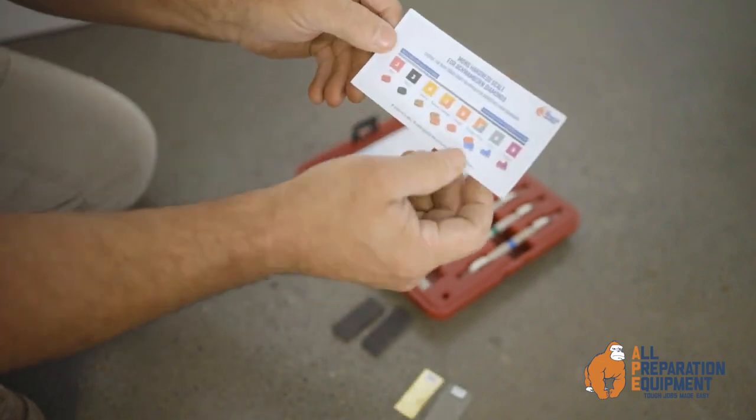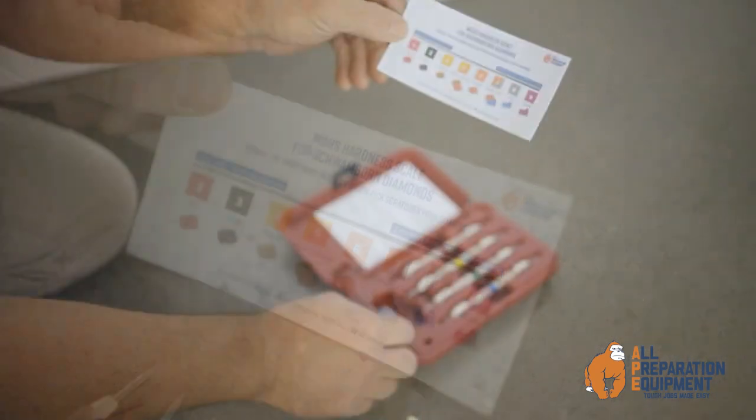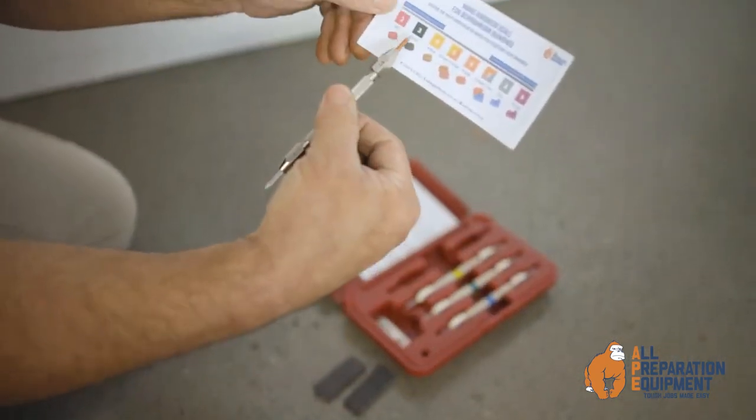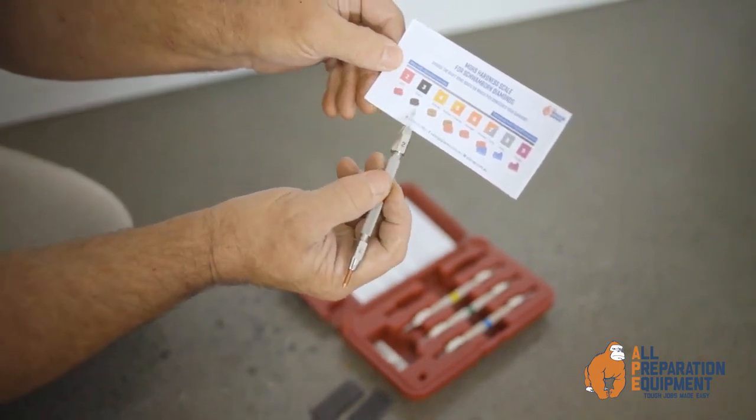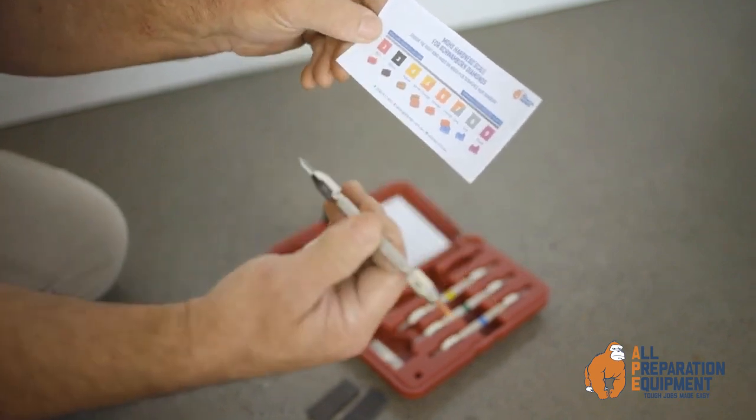On the back of this table is a color chart for the Schwamborn range of diamonds. If you do a scratch test on concrete and it's coming up around three or two, you need to select these colors here being red or black because that concrete will be very soft and you need to go to a hard bond diamond.